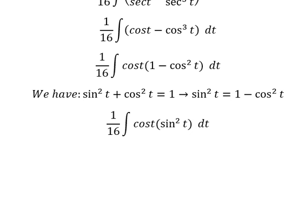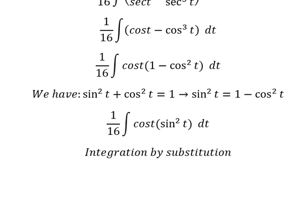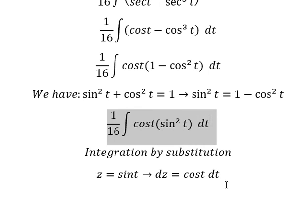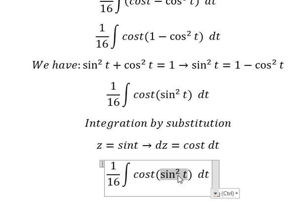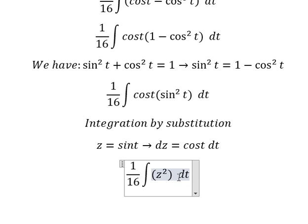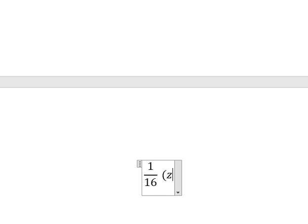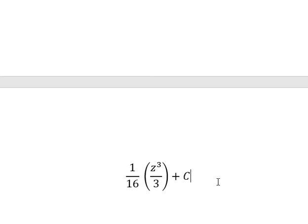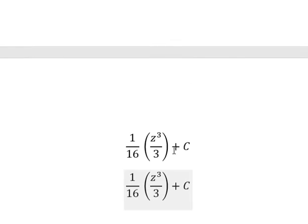Next, we use integration by substitution. I put z equal to sin(t). Taking the derivative of both sides gives dz equals cos(t) dt. We change sin(t) by z, and z² times cos(t) dt becomes z² dz. Integrating gives z³ over 3 plus C, where z is sin(t).